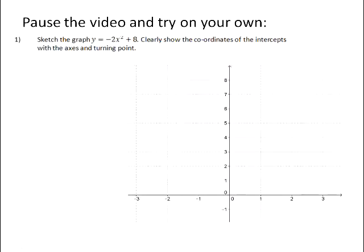Please pause the video and try these on your own, and then check your answers from the video. Number one, sketch the graph y equals negative 2x squared plus 8. Clearly show the coordinates of the intercepts with the axes and the turning point.